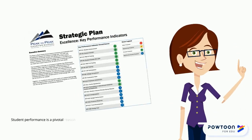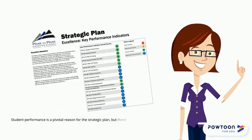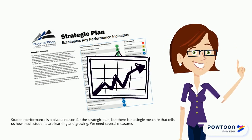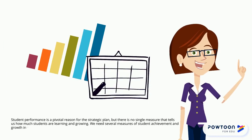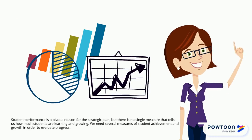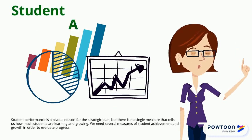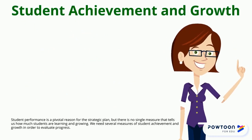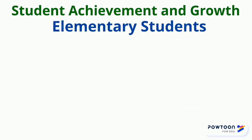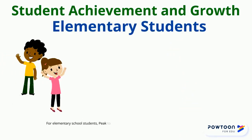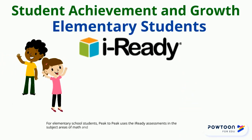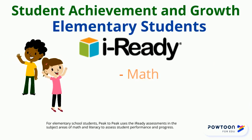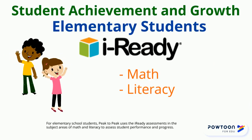Student performance is a pivotal reason for the strategic plan, but there is no single measure that tells us how much students are learning and growing. We need several measures of student achievement and growth in order to evaluate progress. For elementary school students, Peak2Peak uses the iReady assessments in the subject areas of math and literacy to assess student performance and progress.